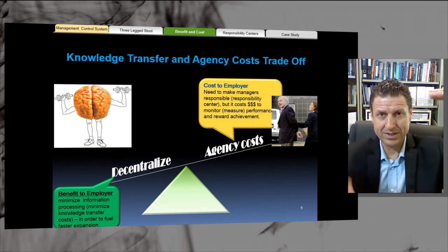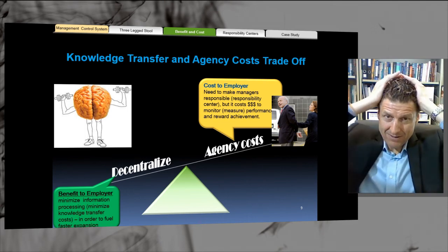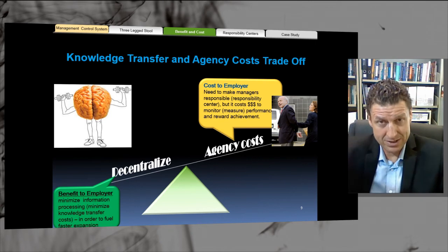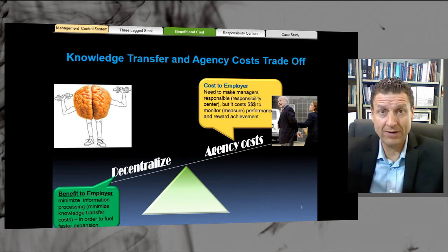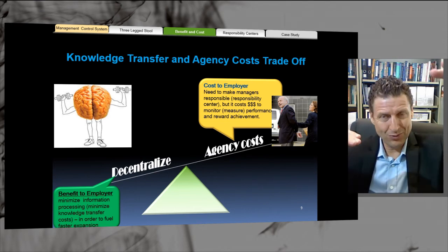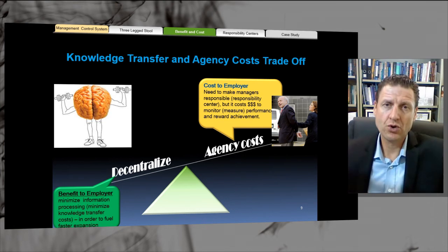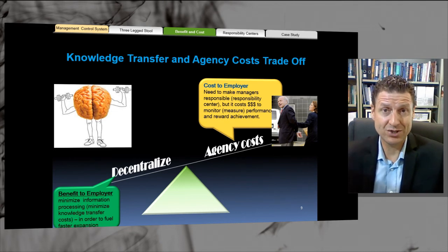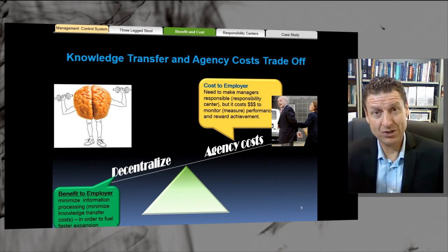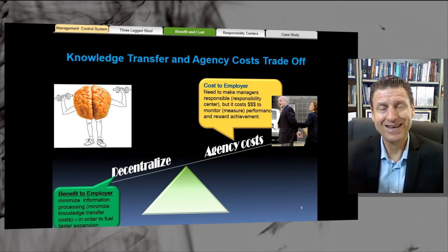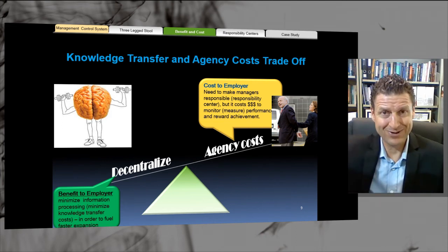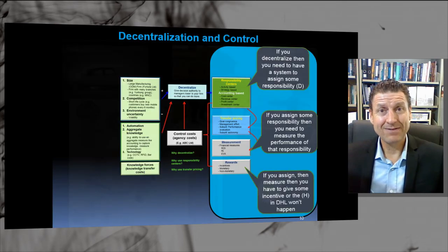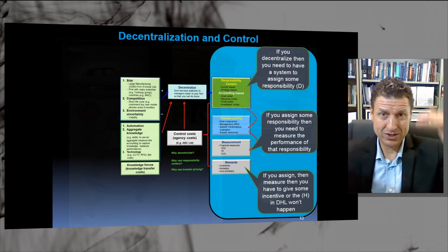We've got to try and balance these things. We can't just centralize everything because it creates too much cognitive overload and information overload — there are about five or six reasons why we want to decentralize, and it's the only way to grow in most cases. So we've made the decision to decentralize; knowledge transfer costs are going down. I don't have to make all the decisions — I can focus on strategy and the big picture, getting all my sales managers and divisions doing what they do best. But now we need to control all of those divisions, otherwise they get out of control, and agency costs go up in that process.